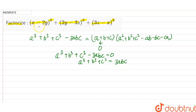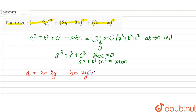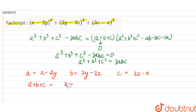So in this question, firstly we have to find the value of a plus b plus c. In this case, a is (x minus 2y), b is (2y minus 3z), and c is (3z minus x). So let's calculate the value of a plus b plus c, which equals (x minus 2y) plus (2y minus 3z) plus (3z minus x).